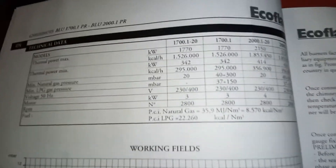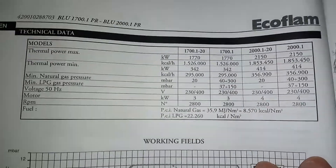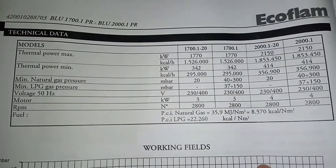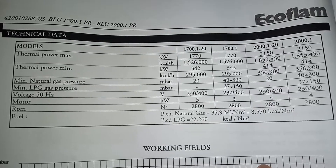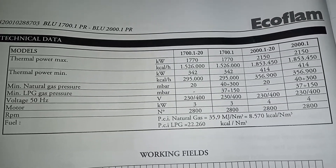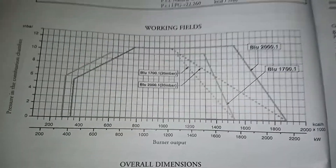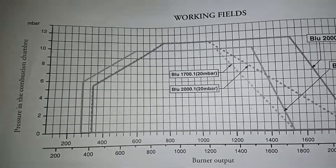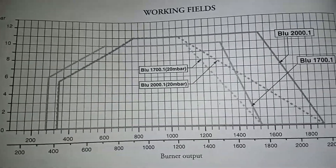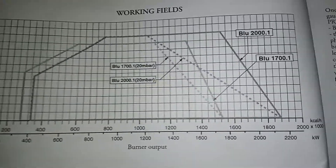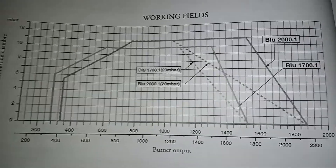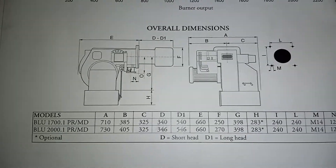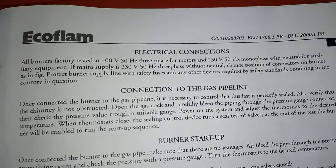Up here in the manual it states our thermal power, our maximum, our minimum, and then we have our working fields. Over here you have your millibar pressure in the combustion chamber and then your burner output — so the correlation between the two. We have our overall dimensions and our electrical connections.